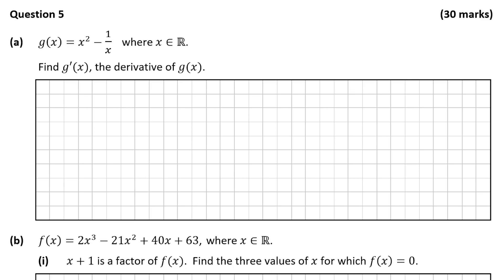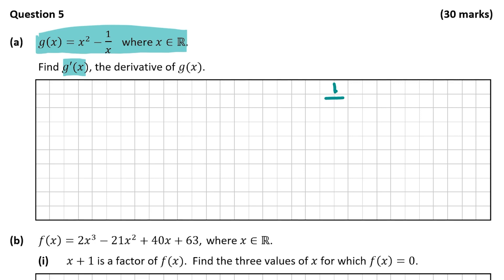In question A we're told that g of x is equal to x squared minus 1 over x, where x is a real number, and we're told to find the derivative of g of x, g dash x. The first thing I do when I come across an equation to be derived where there's 1 over x is rewrite it — 1 over x can be written as x to the power of minus 1. Similarly, 1 over x squared can be written as x to the power of minus 2, and so on.